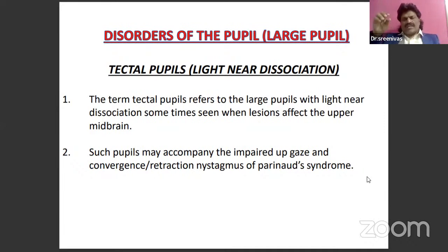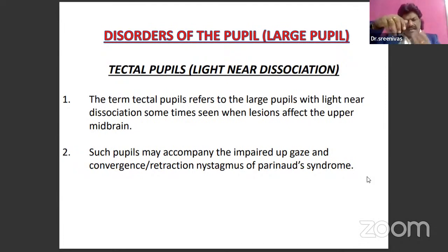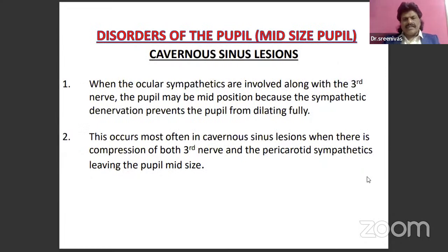In Parinaud's syndrome (dorsal midbrain lesion), not only are pupils dilated (third nerve parasympathetic affected), but you also have impaired upgaze, convergence and retraction nystagmus — very characteristic features. These make Parinaud's syndrome a clinically important and fascinating condition to recognize.